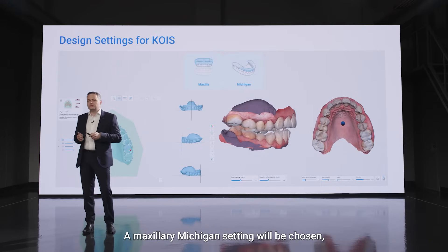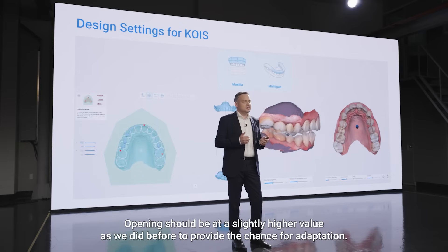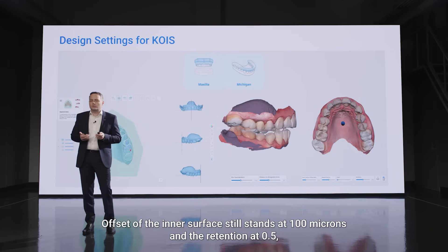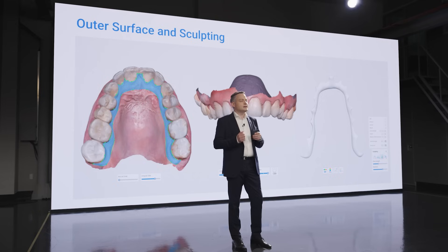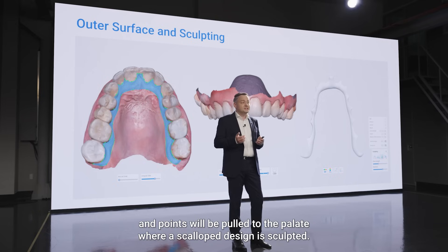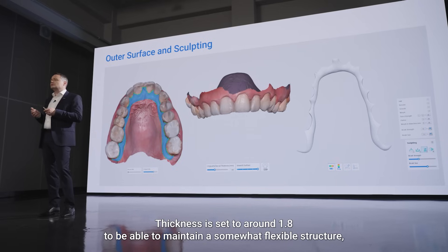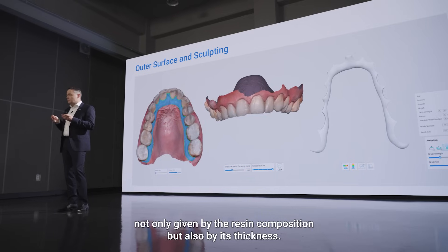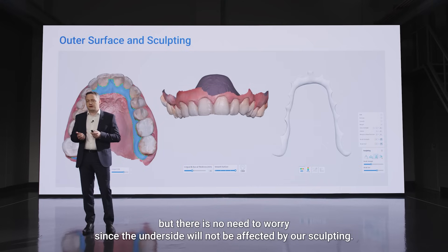A maxillary Michigan setting will be chosen, followed by an alignment to the occlusal plane provided by the app. Opening should be a slightly higher value than before to provide the chance for adaptation. Offset of the inner surface will stand at 100 microns and the retention at 0.5, while the insertion direction should have a good view at the palatal aspect of the teeth. The buckle side slider will be set to a minimum and points will be pulled to the palate where a scalloped design is sculpted. On the inner interincisive zone a rectangle is drawn that will accommodate the future coil's attachment. Thickness is set to around 1.8 to maintain a somewhat flexible structure, given not only by resin composition but also by its thickness. Surface needs to be smoothed, but there is no need to worry since undersides will not be affected by our sculpting.